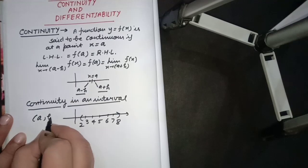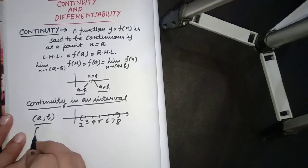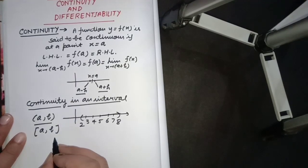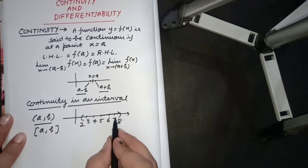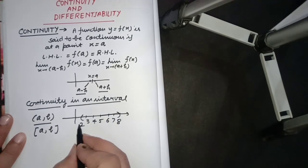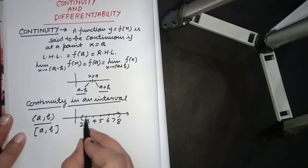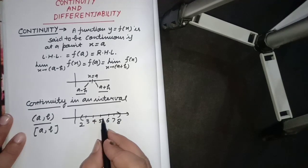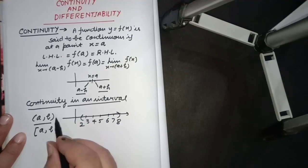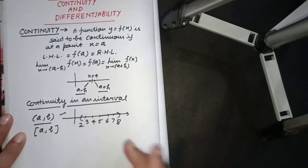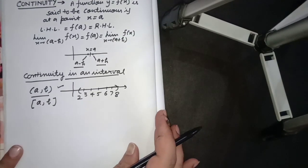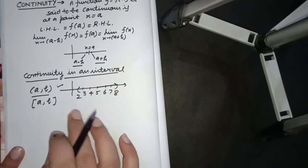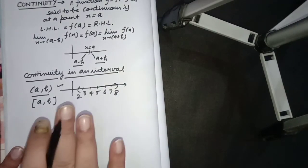That is for open interval (a, b). For closed interval [a, b], a function that is continuous must be continuous over the whole interval, and additionally at point a from the right and at point b from the left, it must be continuous. That is the criteria for an interval. If we need to check at a point, we use the point condition; for an interval, the function must be continuous at all points of the interval.